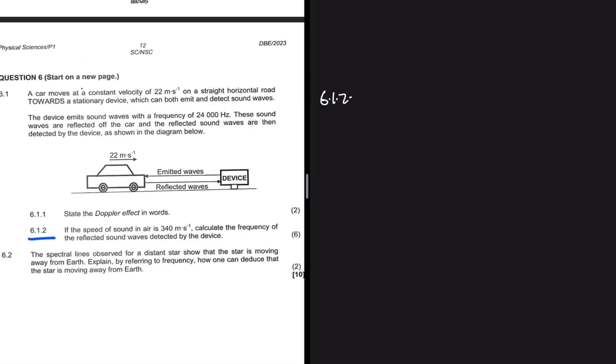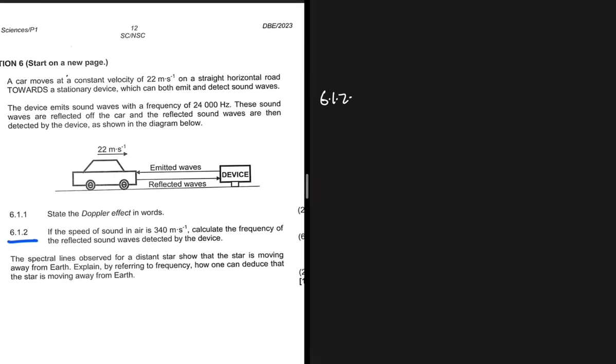The question says a car moves at a constant velocity of 22 meters per second on a straight horizontal road towards a stationary device which can both emit and detect sound waves. The device emits sound waves with a frequency of 24,000 hertz, and these sound waves are reflected off the car and the reflected sound waves are then detected by the device.